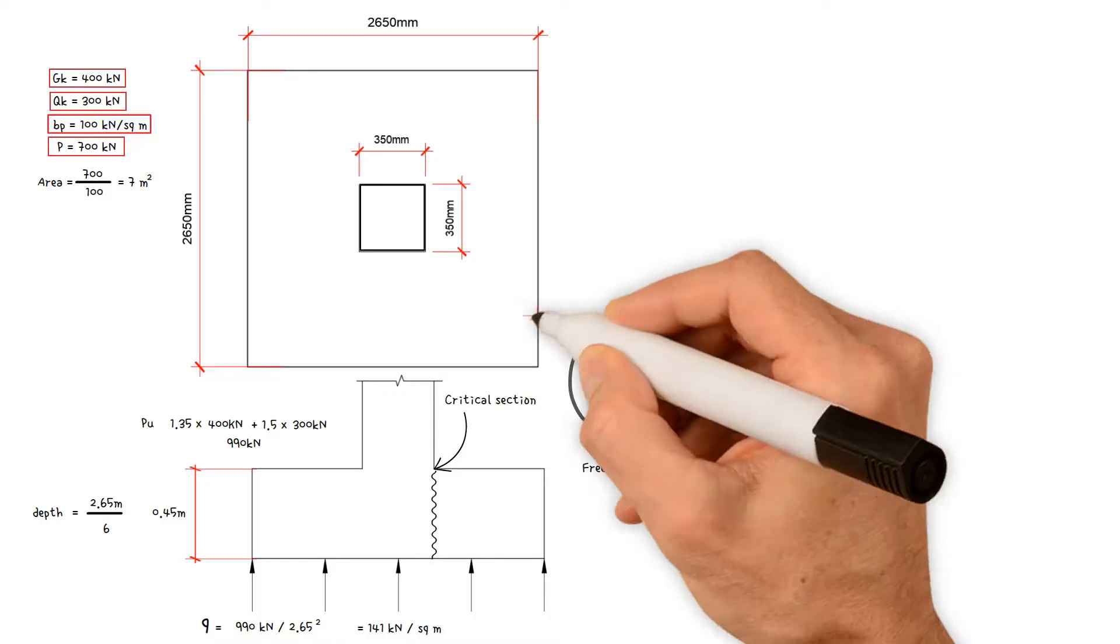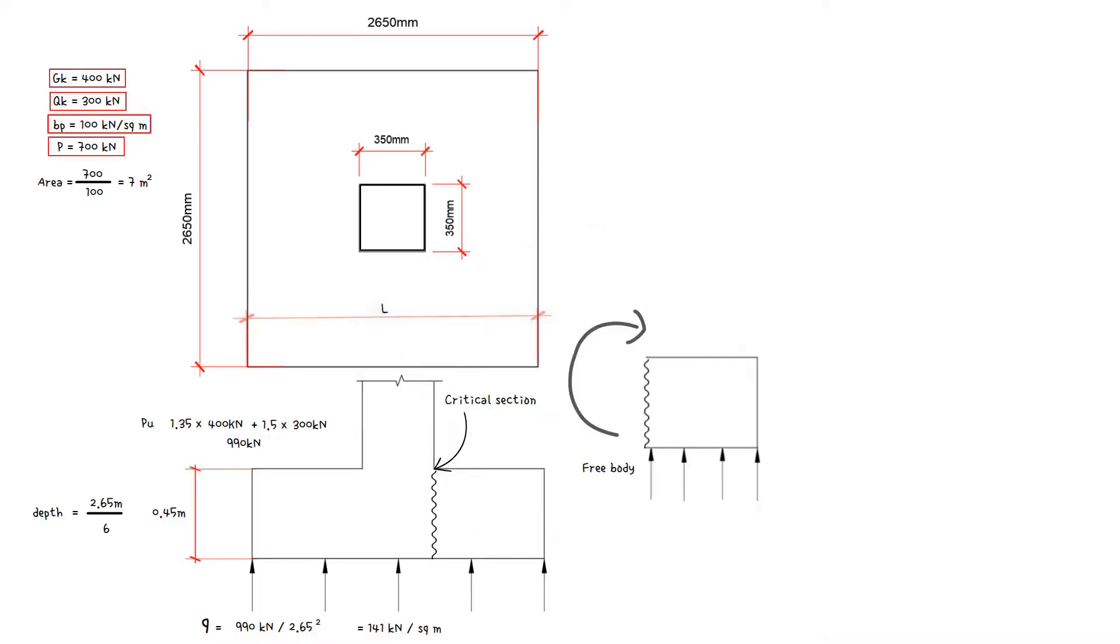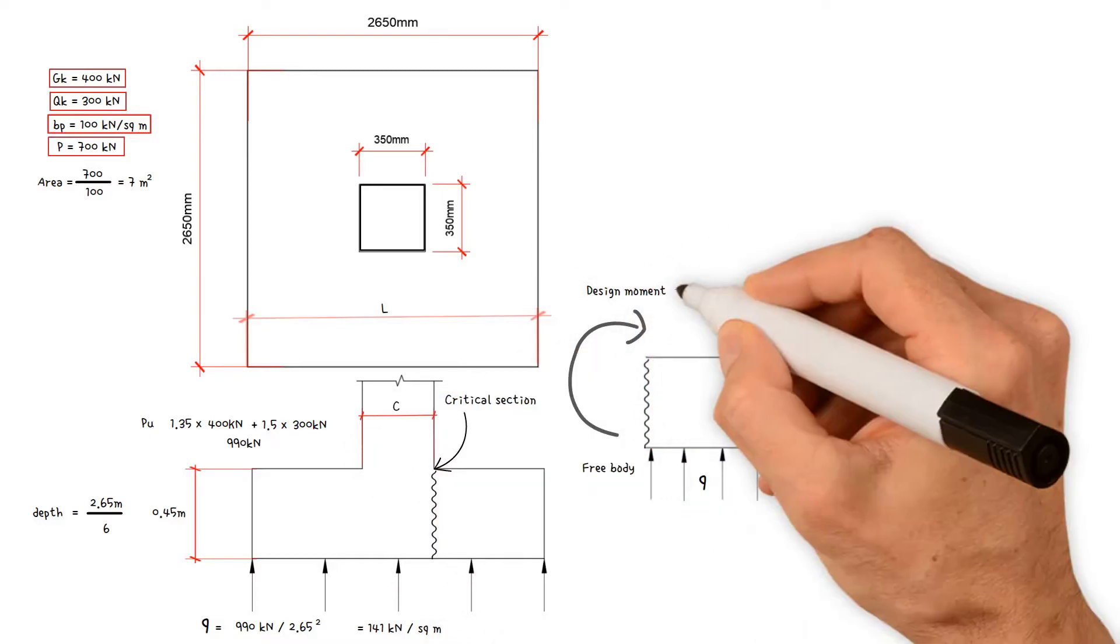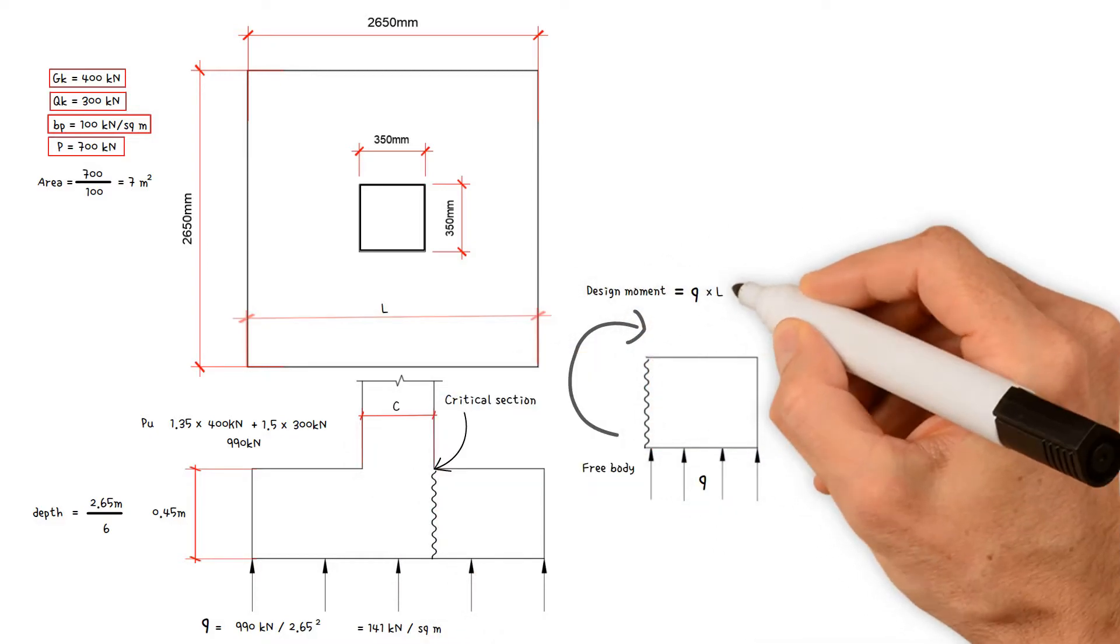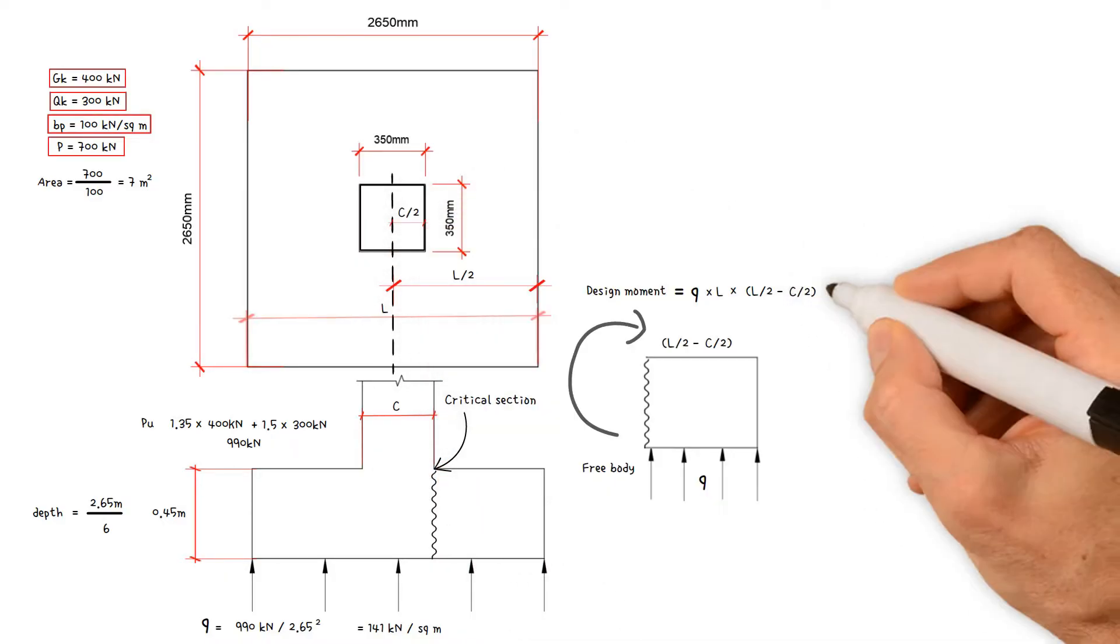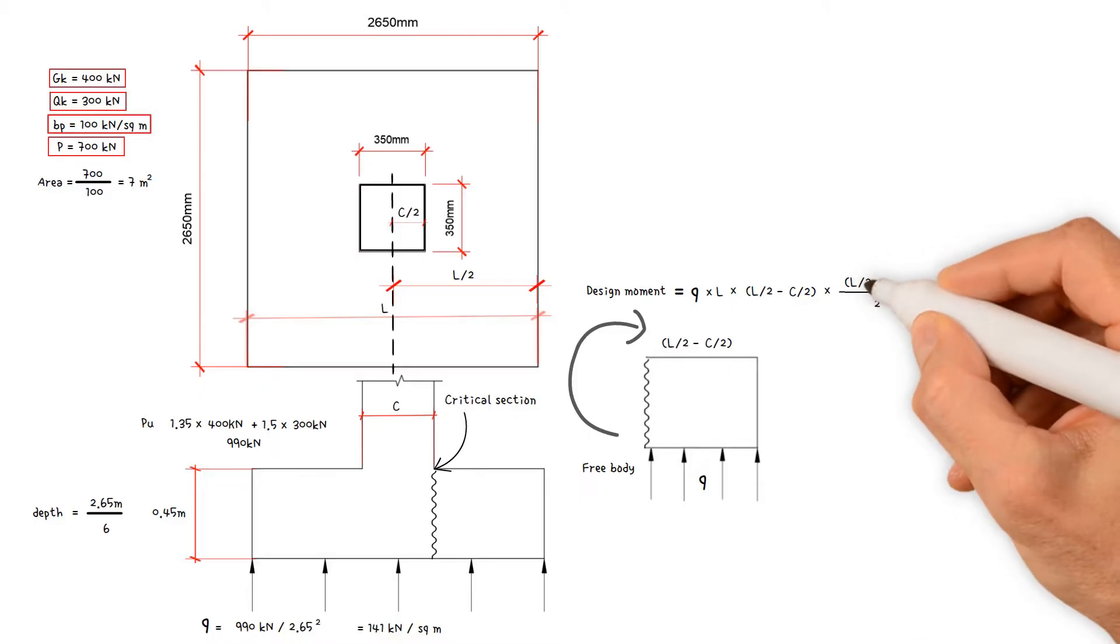Therefore, for a square pad with planned dimensions of length L supporting a square column of width C, the design moment is equal to the ground pressure multiplied by the length multiplied by half the length minus half the column width multiplied by half half the length minus half the column width.